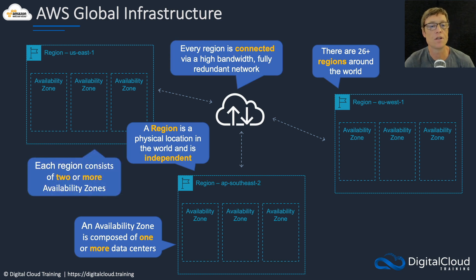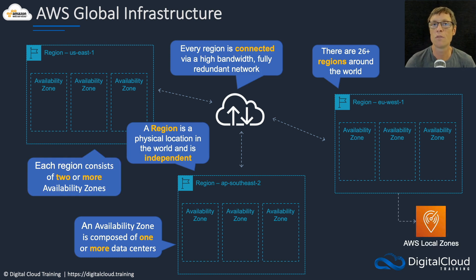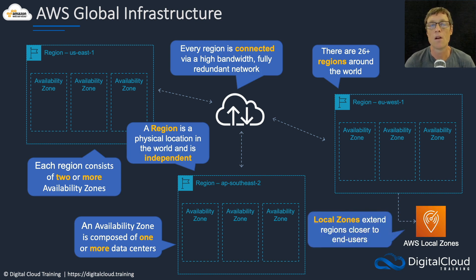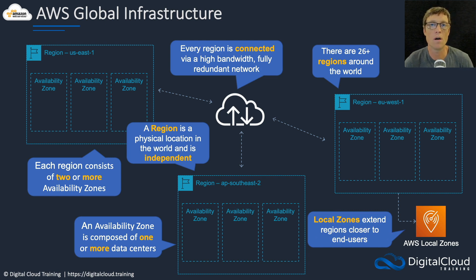Each region will contain two or more availability zones, so you can deploy your resources across availability zones and get lots of redundancy by doing that. There's also something called a local zone, which extends regions closer to your end users — really that's for reducing latency. Latency is the delay over a network, and typically the farther you are from a specific service, the more latency there's going to be.